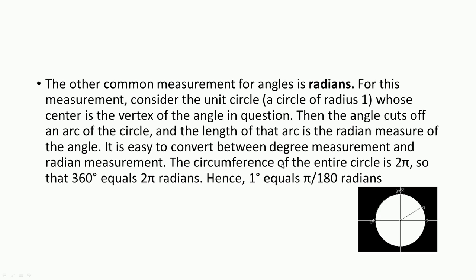Each minute is further divided into 60 equal parts, and each small part is called one second. For instance, 2 degrees 5 minutes and 30 seconds is written as 2°5'30". Parts of a degree are now usually referred to decimally — for example, 7.5 degrees indicates 7 degrees 30 minutes. The other common measurement of angle is radians.